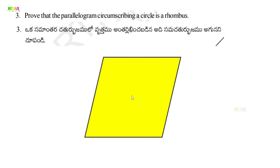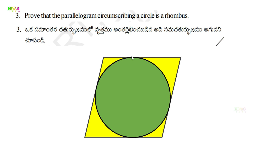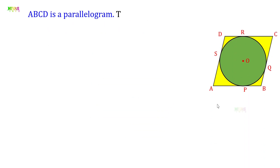I will draw a parallelogram ABCD, and draw a circle inside it such that the circle touches each side. The points of contact are P, Q, R, S. Since ABCD is a parallelogram, opposite sides are equal: AB = CD and BC = AD.